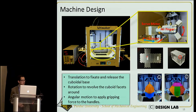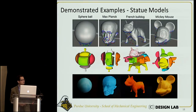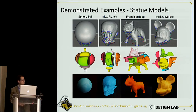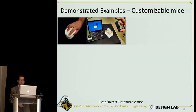We apply RevoMaker to sculpture models with different overhanging features, and RevoMaker achieves zero support for these models. Meanwhile, using the unidirectional traditional 3D printing, it still requires a large amount of support material. We also generate some functional objects.